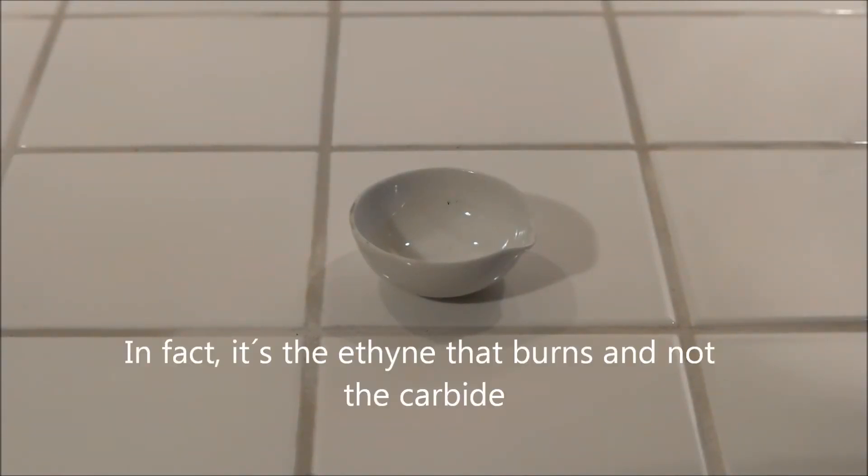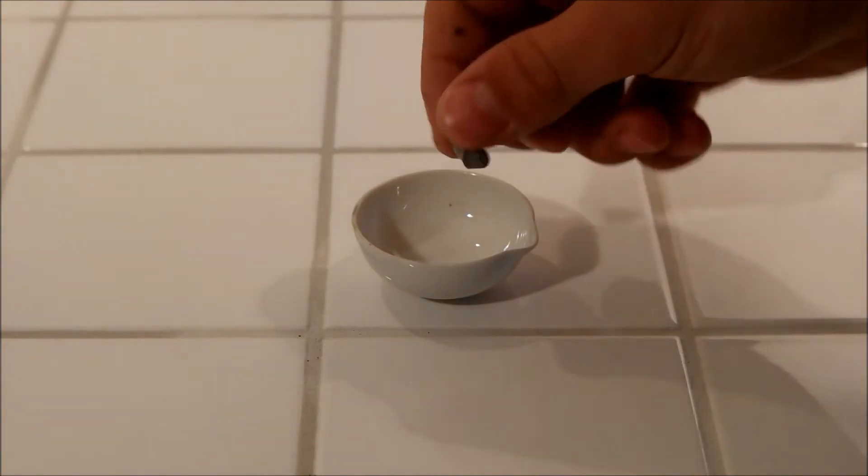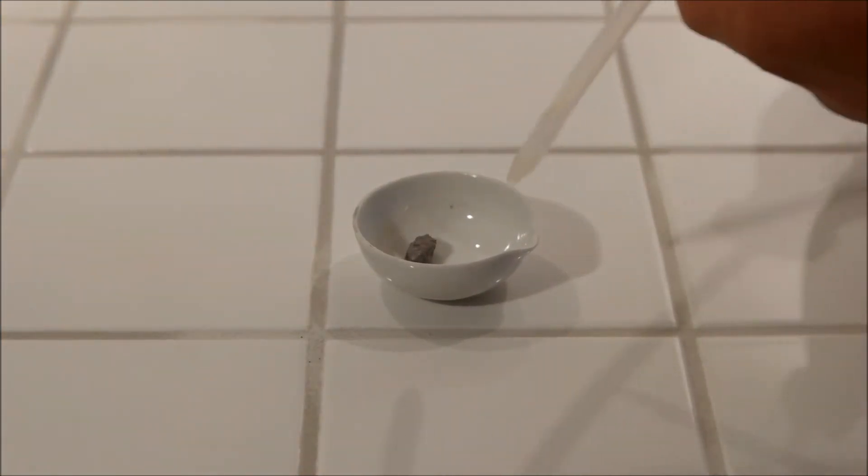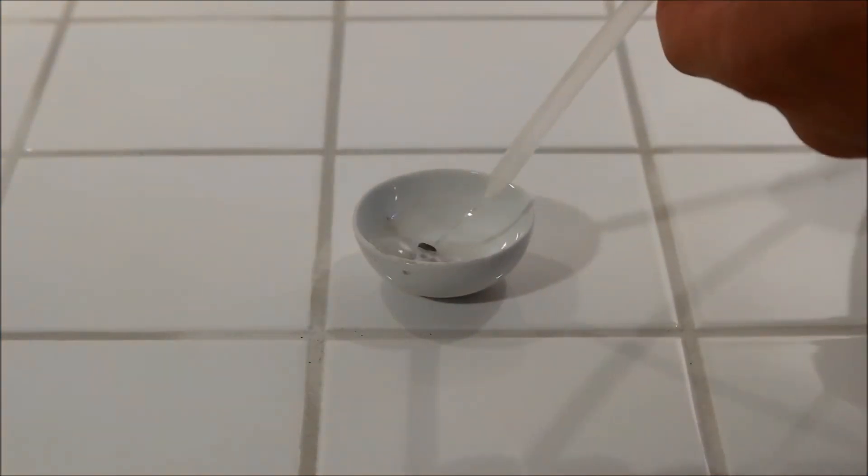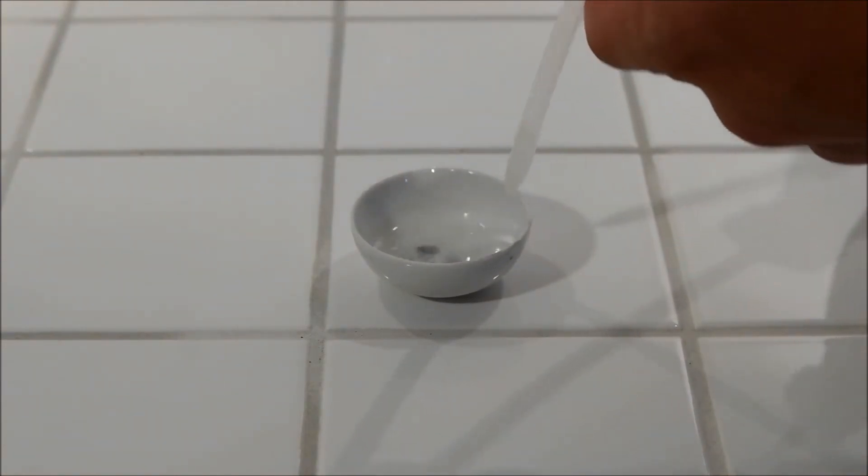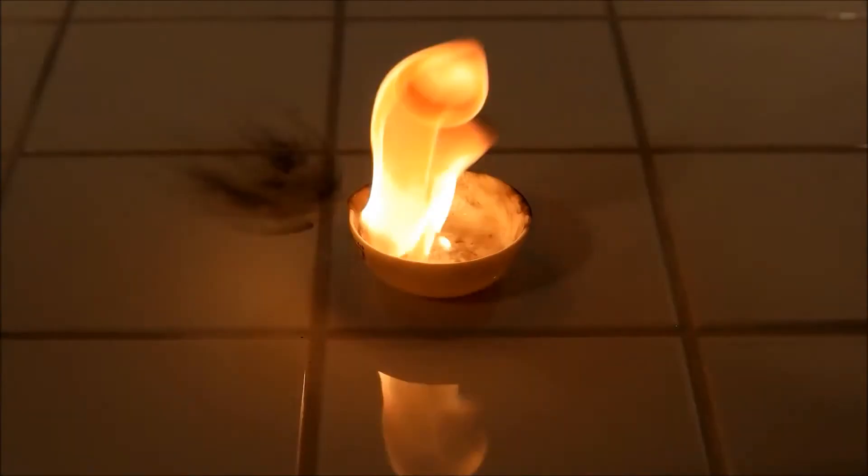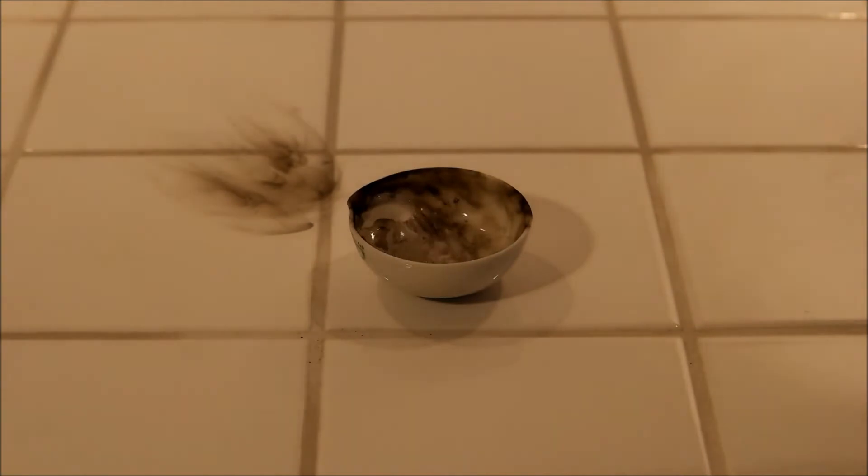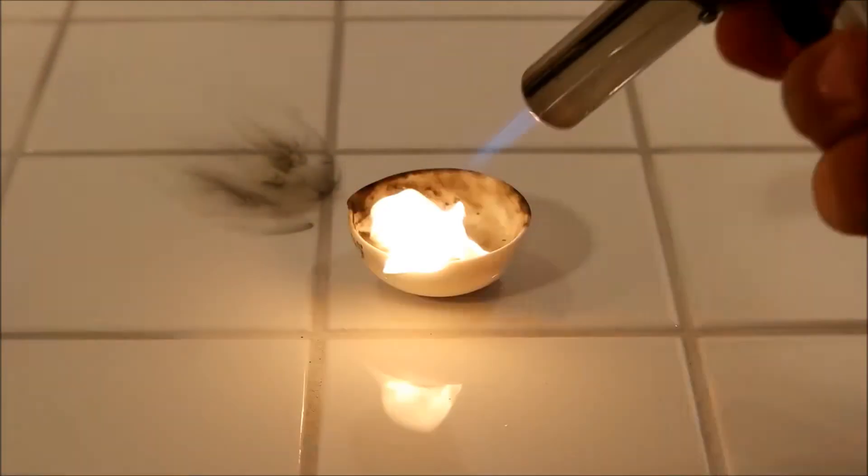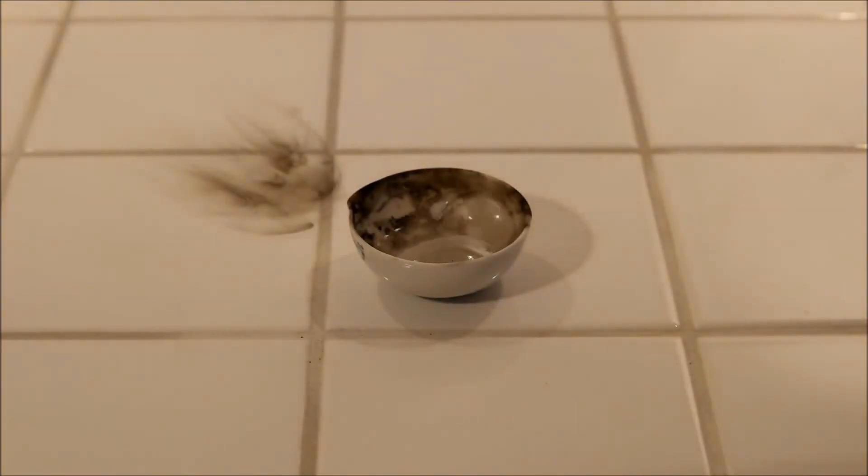Now I want to show you how calcium carbide burns. So I put a small piece of calcium carbide here and I put some water on it and light it up. What you can see is that a lot of carbon black is produced, you can see it fly here, flying everywhere.